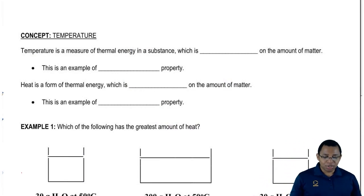Temperature is a measure of thermal energy in a substance. Temperature is independent of the amount of matter that we have. Basically, it doesn't matter how much we have of a substance, the temperature is the temperature.